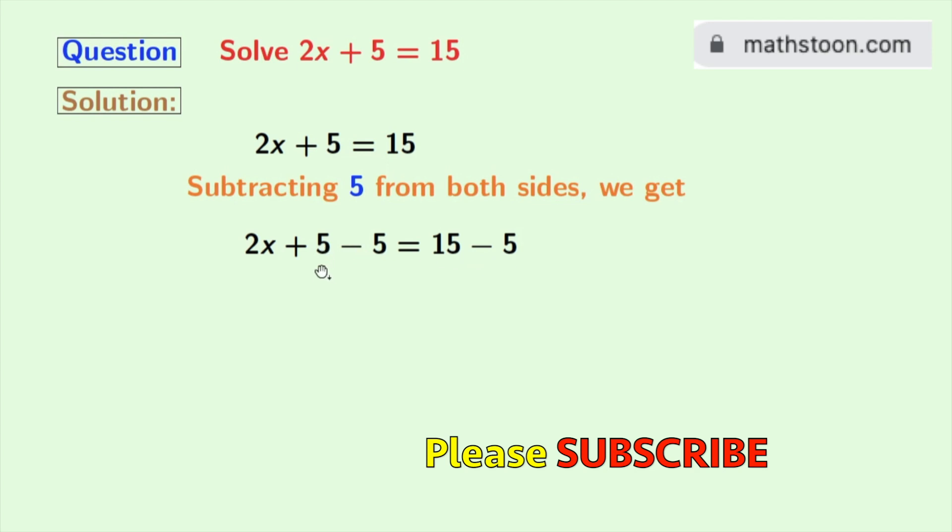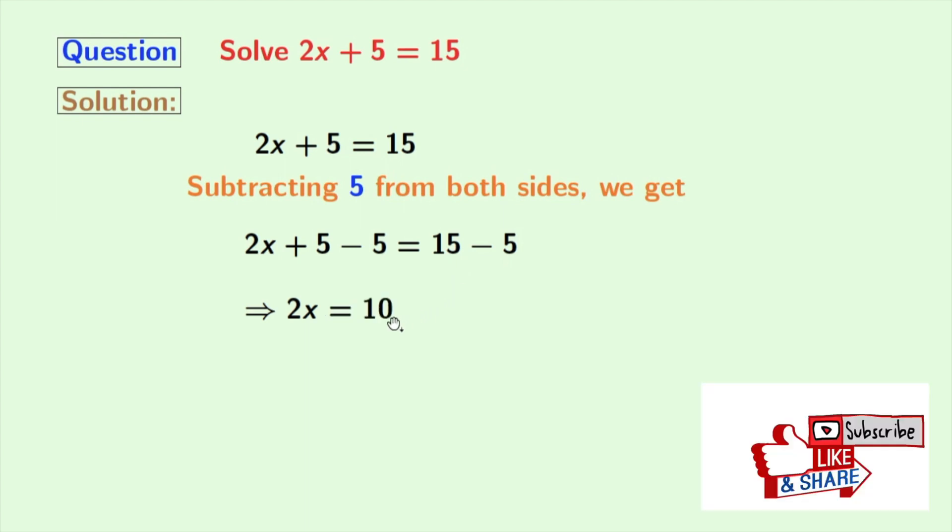Now look, in the left-hand side, we have plus 5 and minus 5, which is 0. So we will have 2x here. In the right-hand side, we have 15 minus 5, which equals 10.